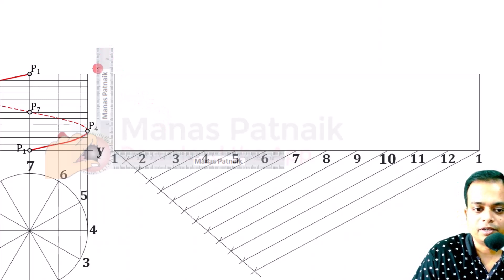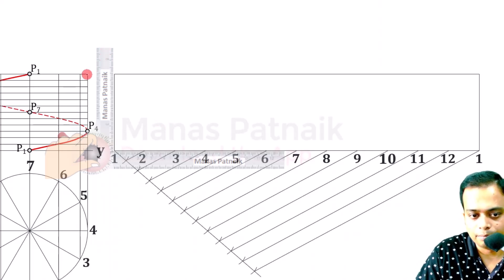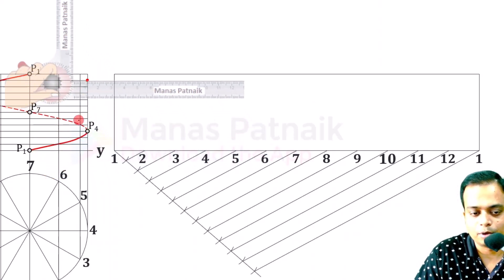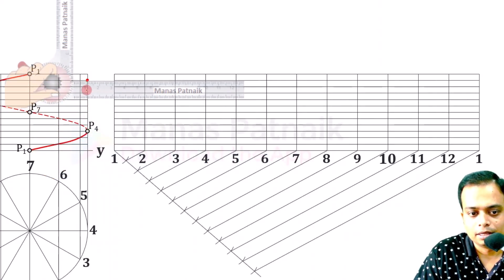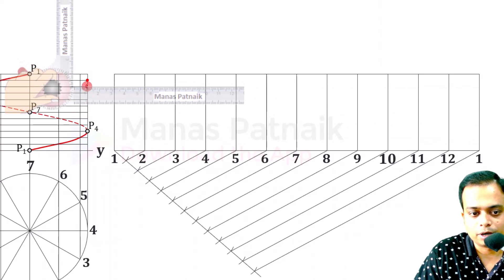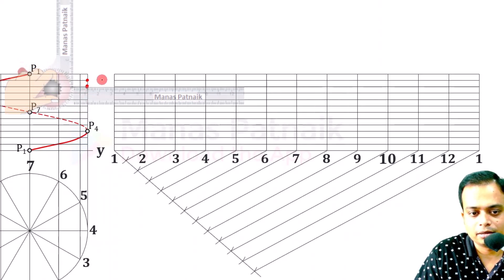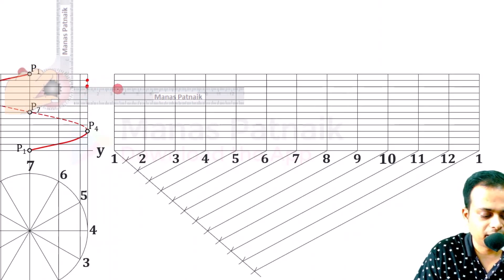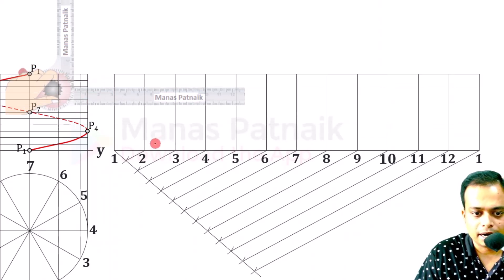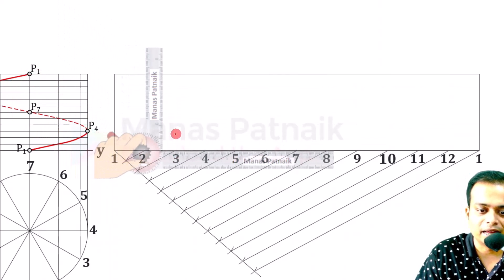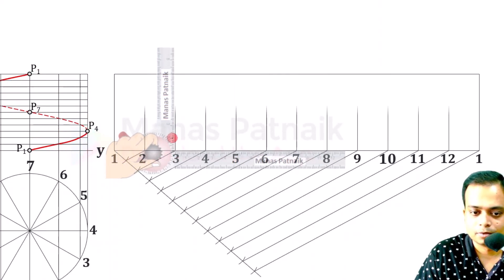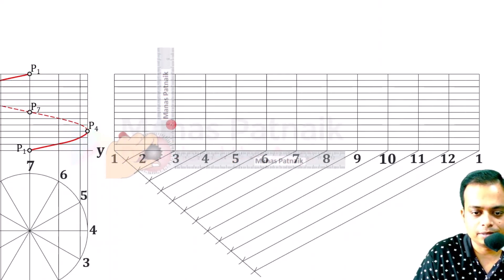Use the drafter in the horizontal-vertical position, bring it to each point and draw a line. Then with the drafter make these vertical lines also. You can make the remaining lines easily.